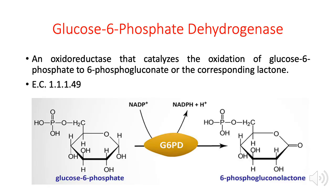We will first start with glucose 6-phosphate dehydrogenase. From the name of the enzyme, it catalyzes the removal of a hydrogen atom from glucose 6-phosphate. When you remove hydrogen and transfer it to another chemical, the reaction is an oxidation or reduction process. That's why glucose 6-phosphate dehydrogenase is considered an oxidoreductase, and the first number in its enzyme nomenclature is number 1, assigned to oxidoreductase enzymes.